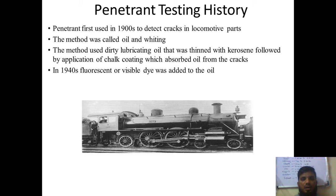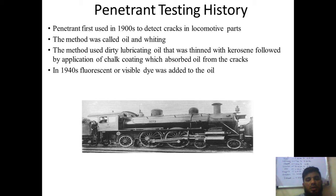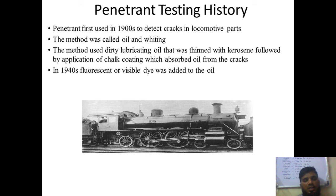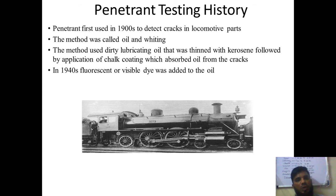Locomotive parts refer to components of diesel or coal engine cycles. This early method was called 'oil and whiting.' It used dirty lubricant oil thinned to a low viscosity — similar to oils mixed with kerosene. Oil and kerosene cannot mix with one another, so you can observe separate layers. Just like on a rainy day you can see rainbow colors on roads from oil and water not mixing, those penetrations used that principle — they would coat surfaces with chalk to observe results.